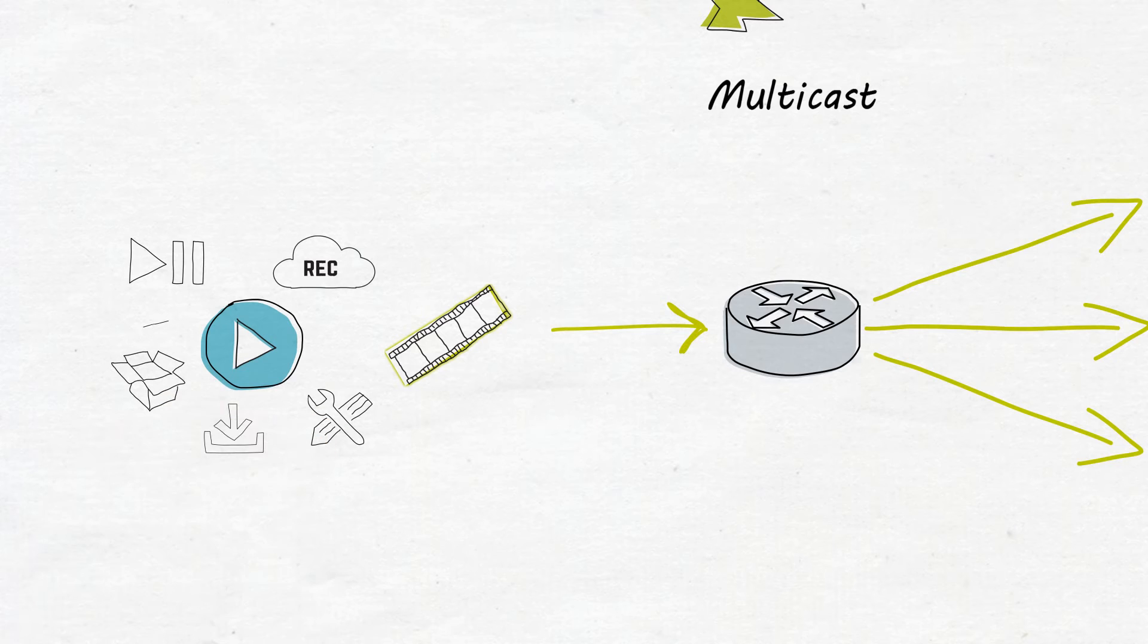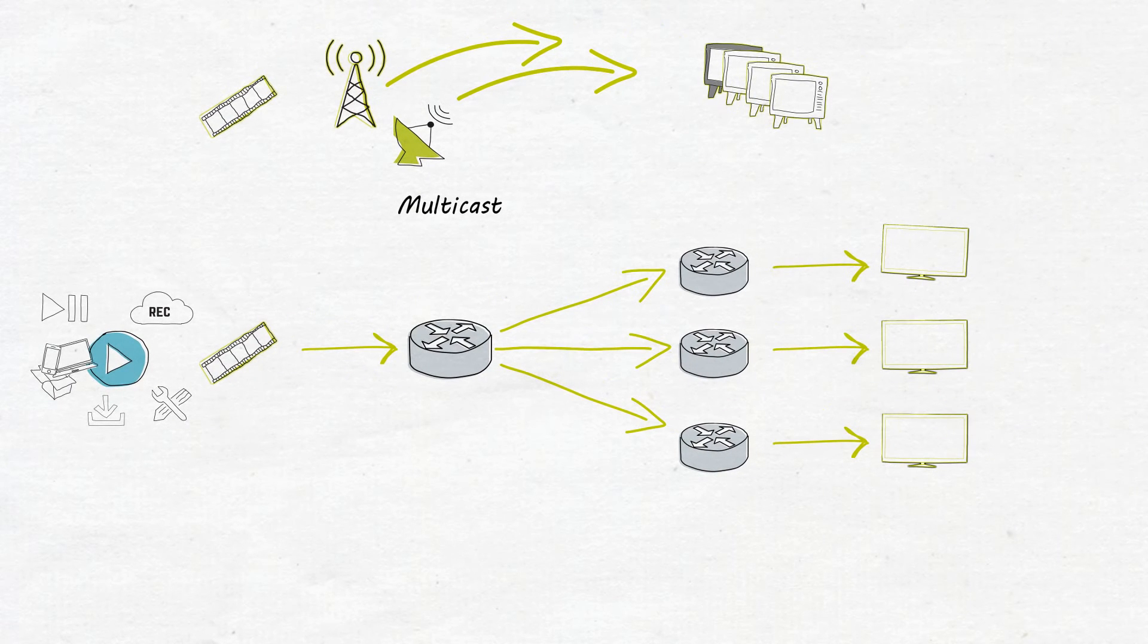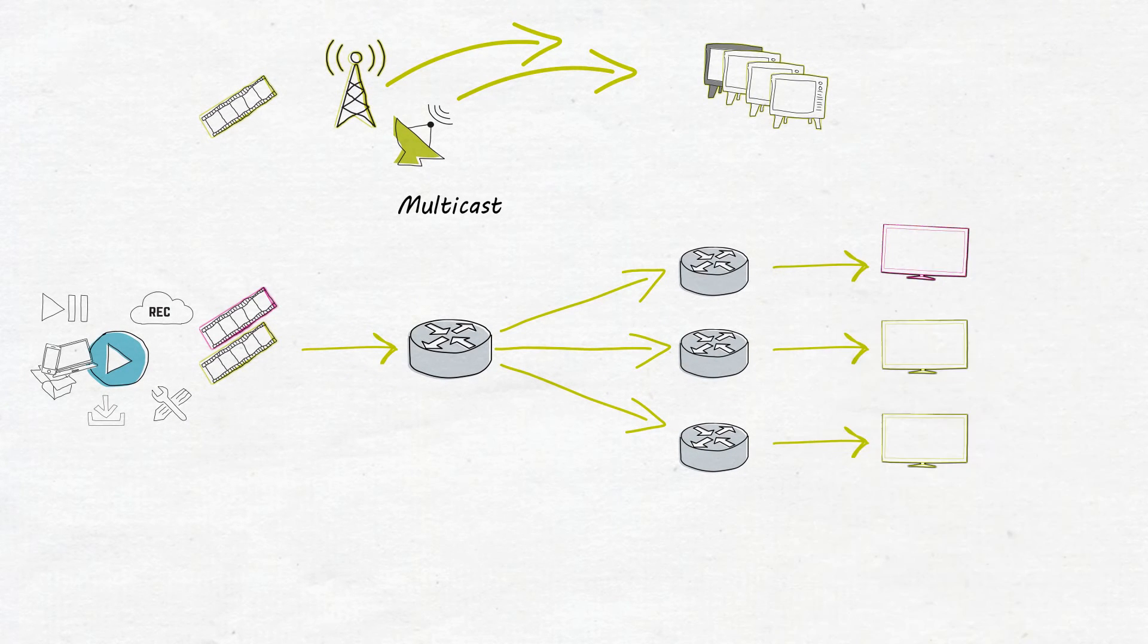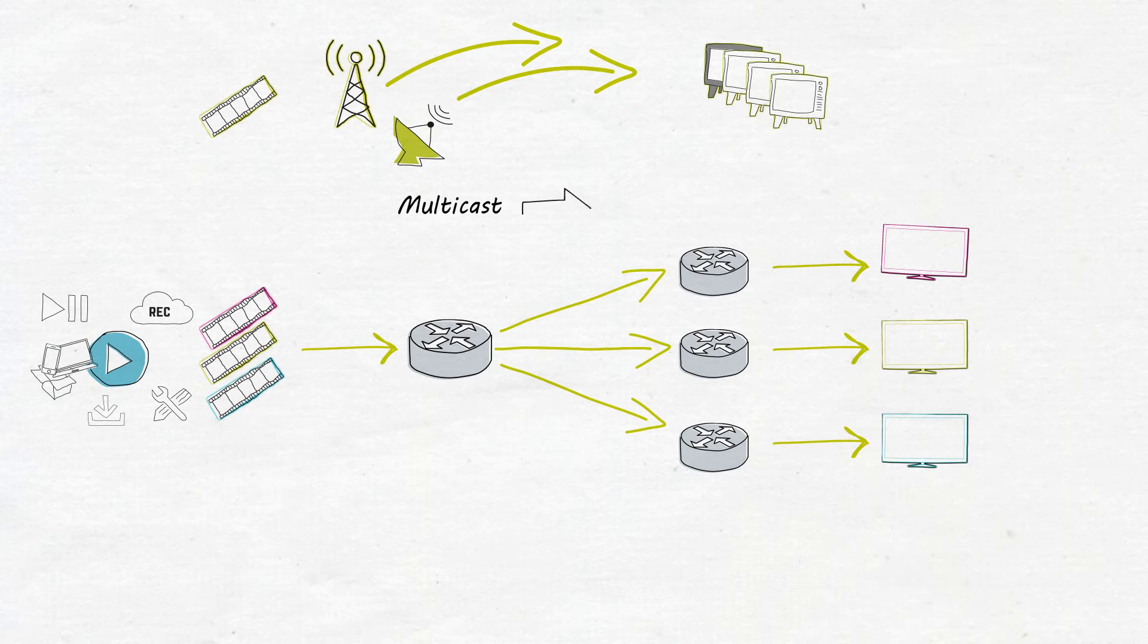And now we also watch on different types of devices too, each one needing the TV stream to be sent in a different format. So we can't just tune in to the same TV stream that everyone else is watching. Each TV stream needs to be unique and tailored just for us. This is called unicast traffic.